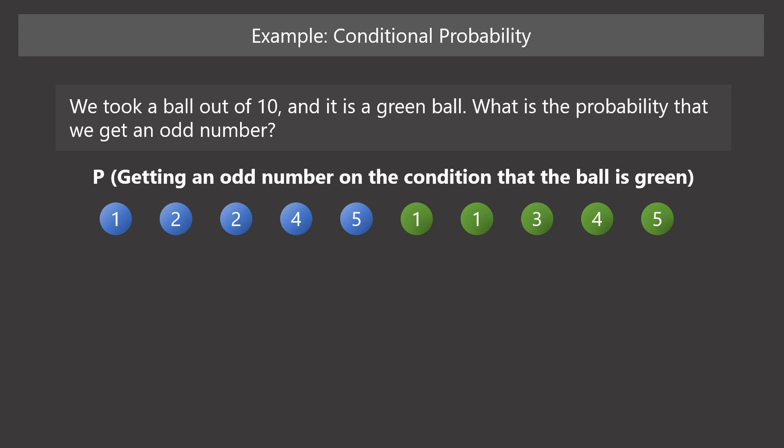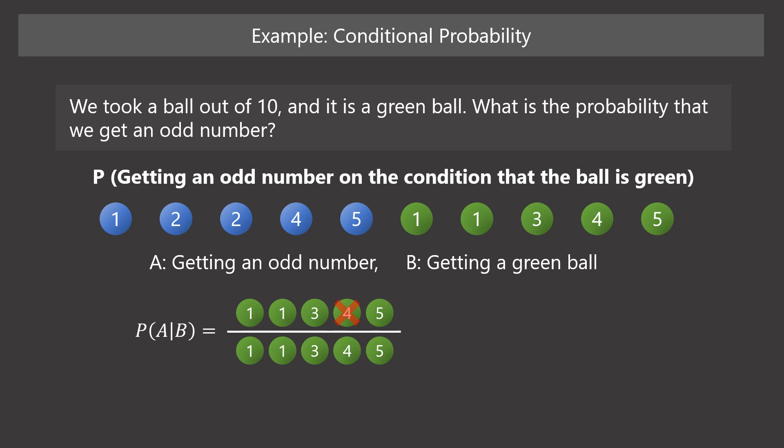We can rewrite this problem as: what is the probability of getting an odd number on the condition that the ball is green? It is a problem of conditional probability. Let's define event A as getting an odd number and event B as getting a green ball. Here, all possible outcomes are conditioned as event B. For this conditional probability, the denominator is the green balls only, and the numerator includes only green balls with an odd number.